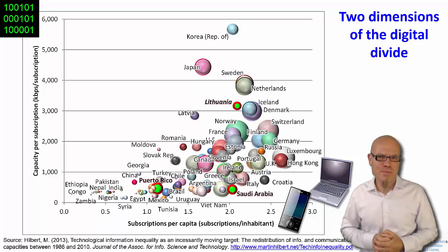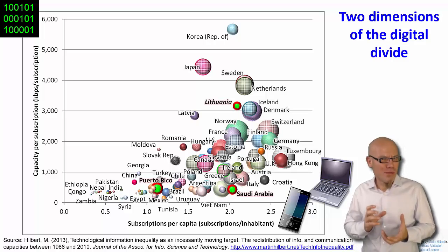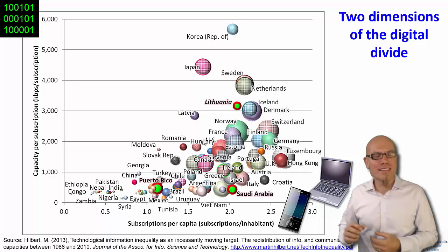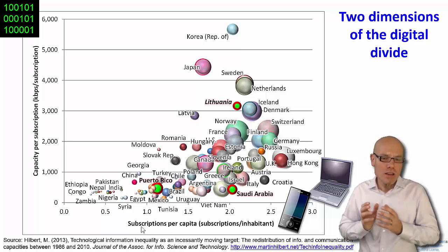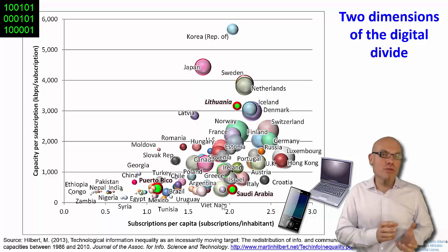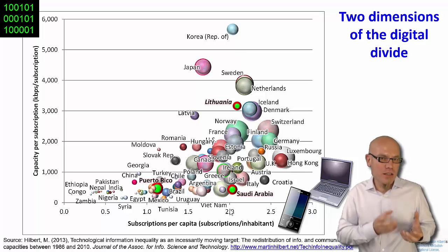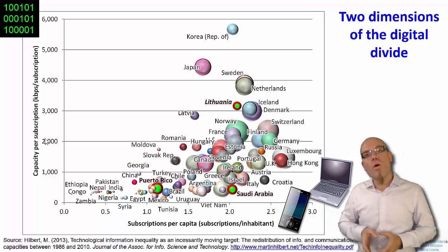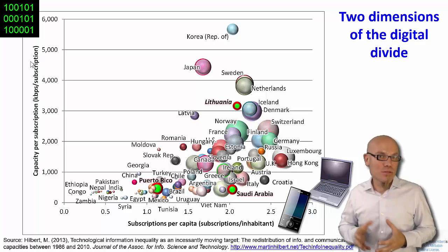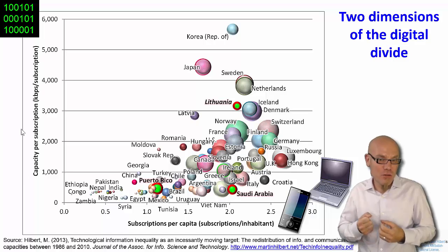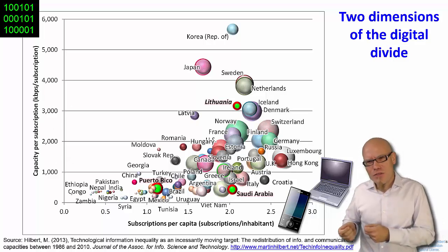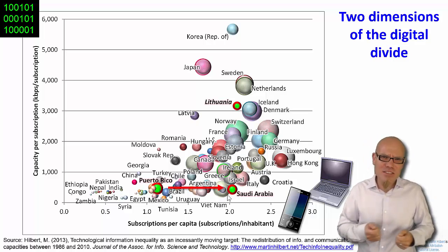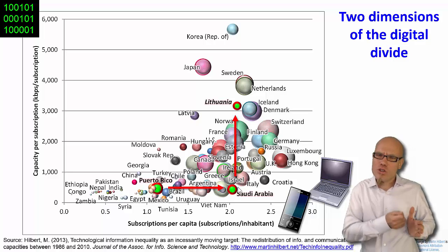Let's look at a graph with different bubbles representing countries. The horizontal X-axis shows the number of subscriptions per capita — here at one subscription per capita everyone has one ICT device, and here at two subscriptions per capita everyone has two devices. The vertical Y-axis shows the capacity per subscription — the installed bandwidth potential measured in kilobits per subscription on average. Countries appear to migrate along the X-axis to the right, and then hit a kind of wall at around two subscriptions per person.